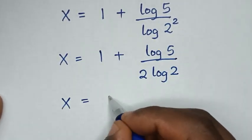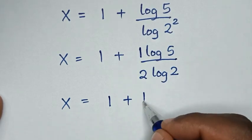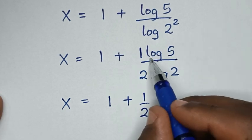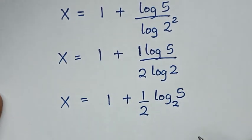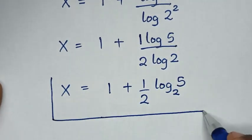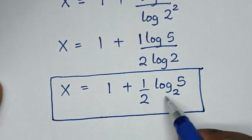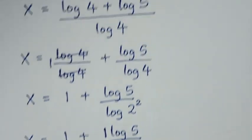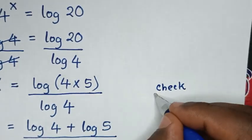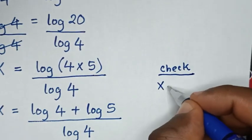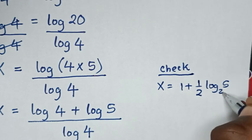So it is 1 plus one-half times log of 5 over log of 2. Log of 5 over log of 2 is the same as log of 5 base 2. So this is the final answer: x is equal to 1 plus one-half log of 5 base 2.